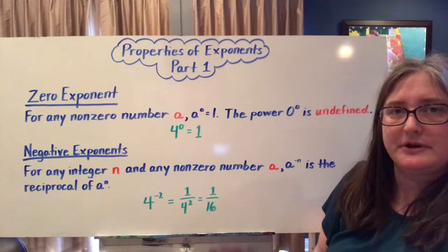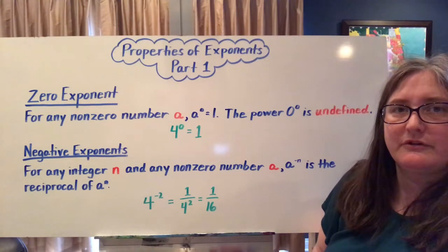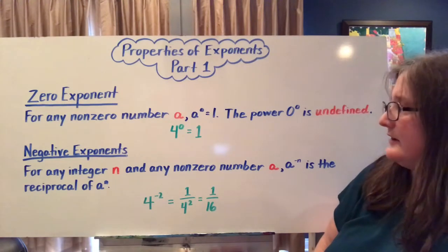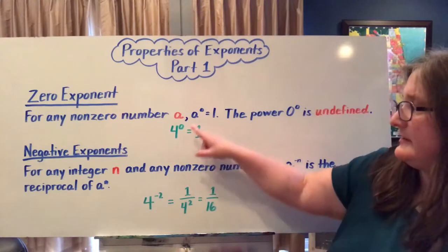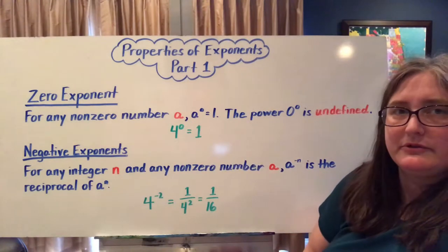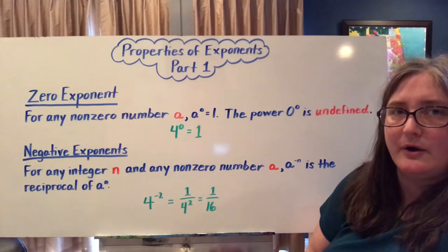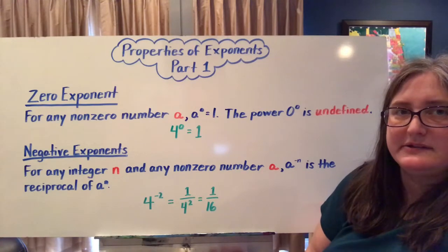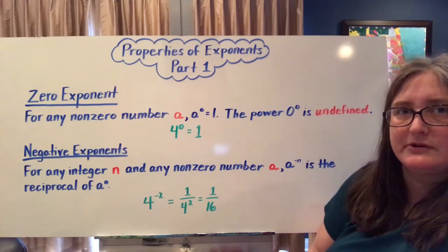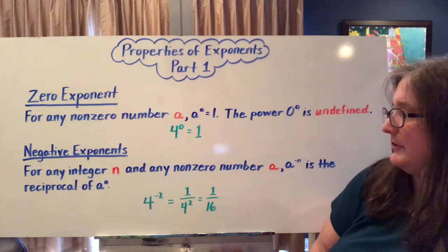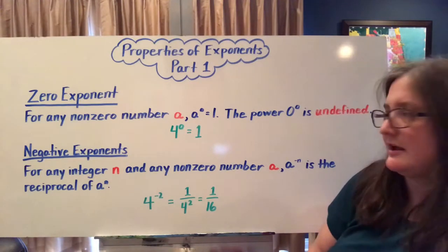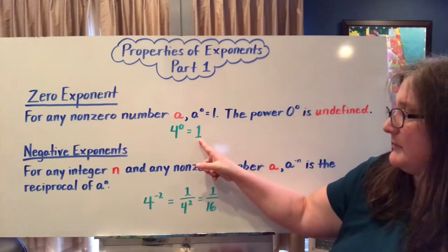The first is the zero property, which says for any non-zero base number a, that number to the zero power will always equal one. The exception is if your base is zero — zero to the zero power is undefined. So for an example, if I saw four to the zero power, the answer is going to be one.